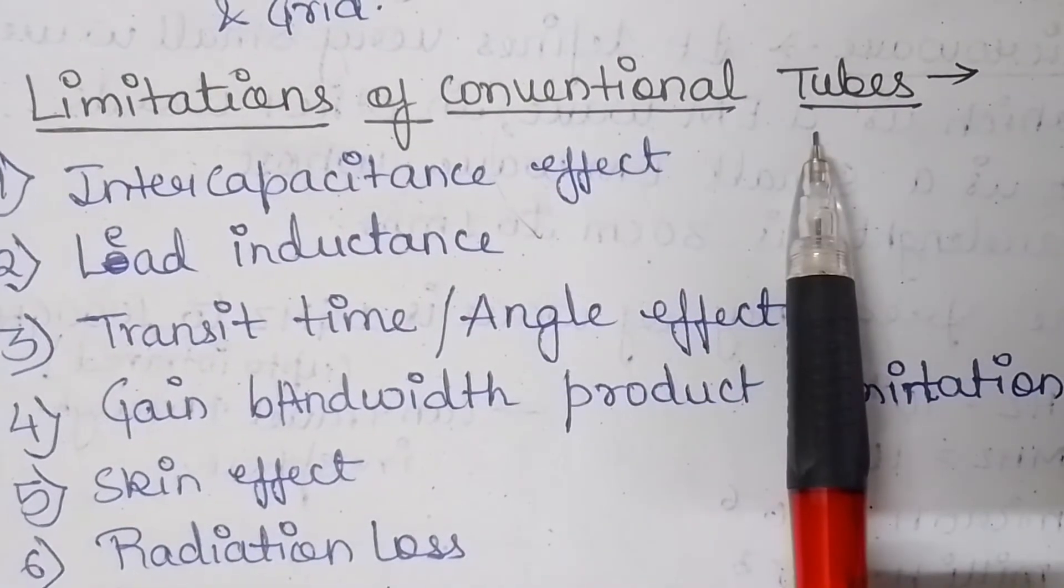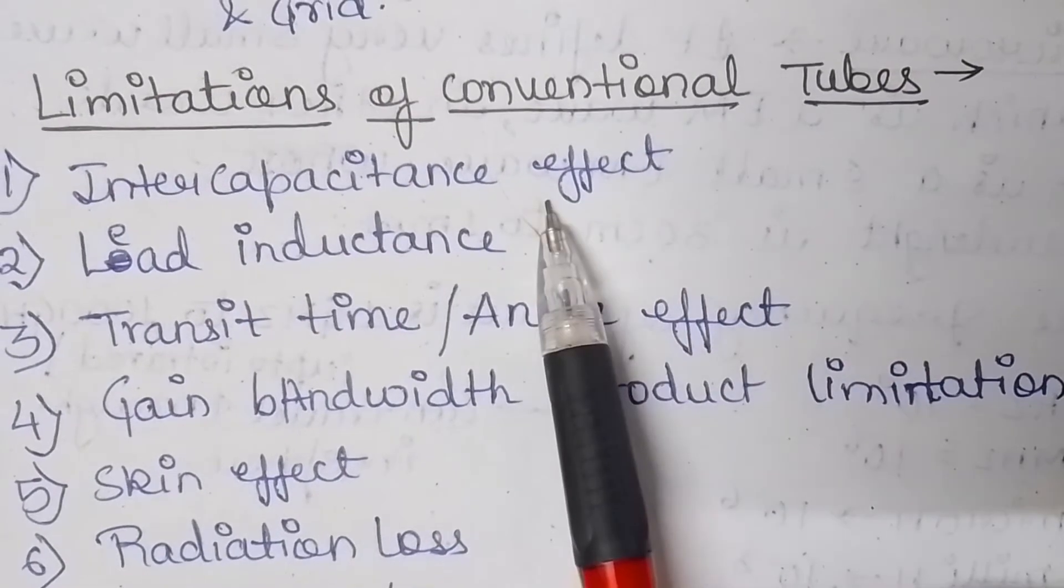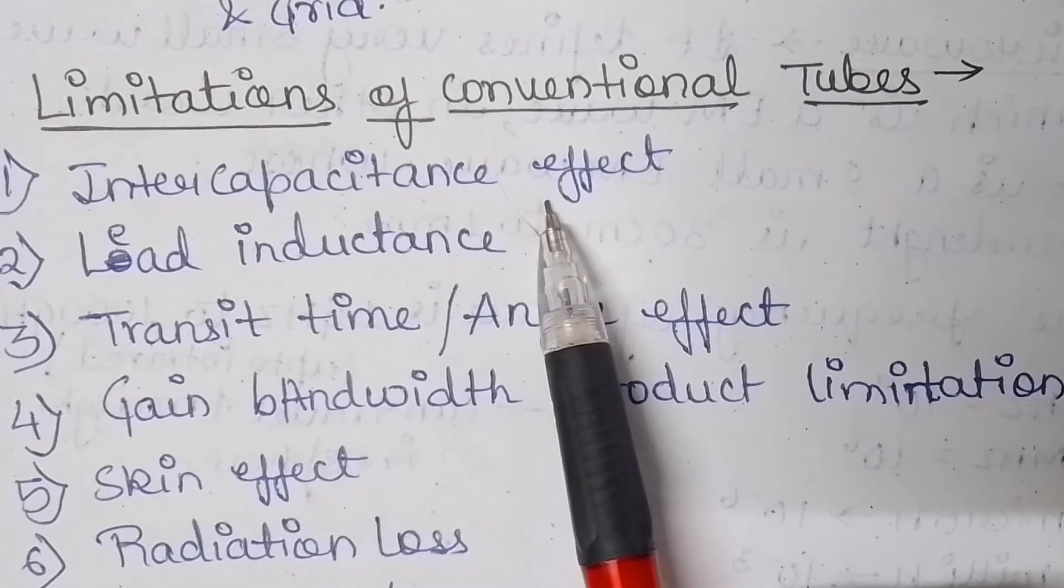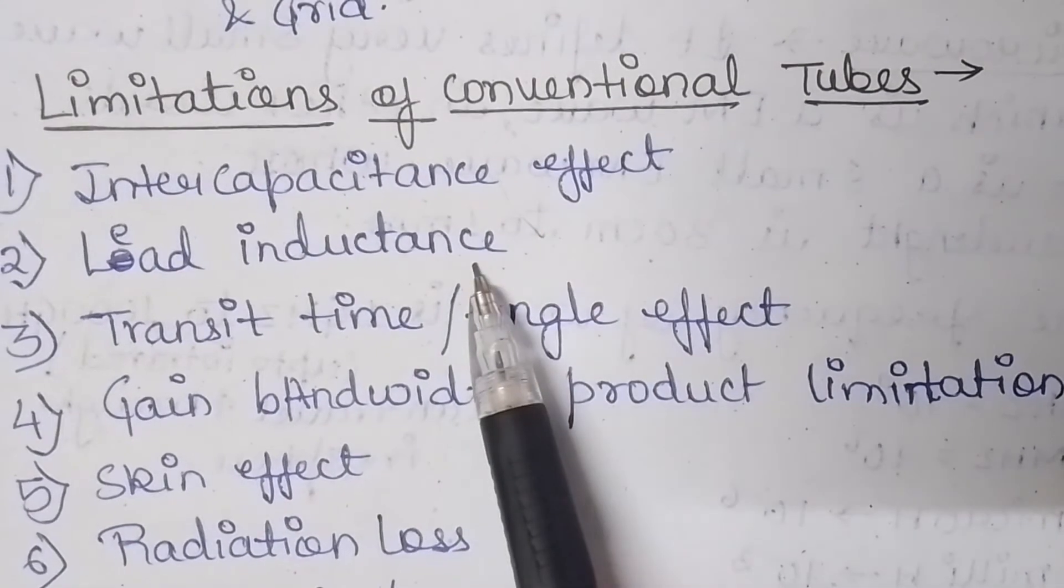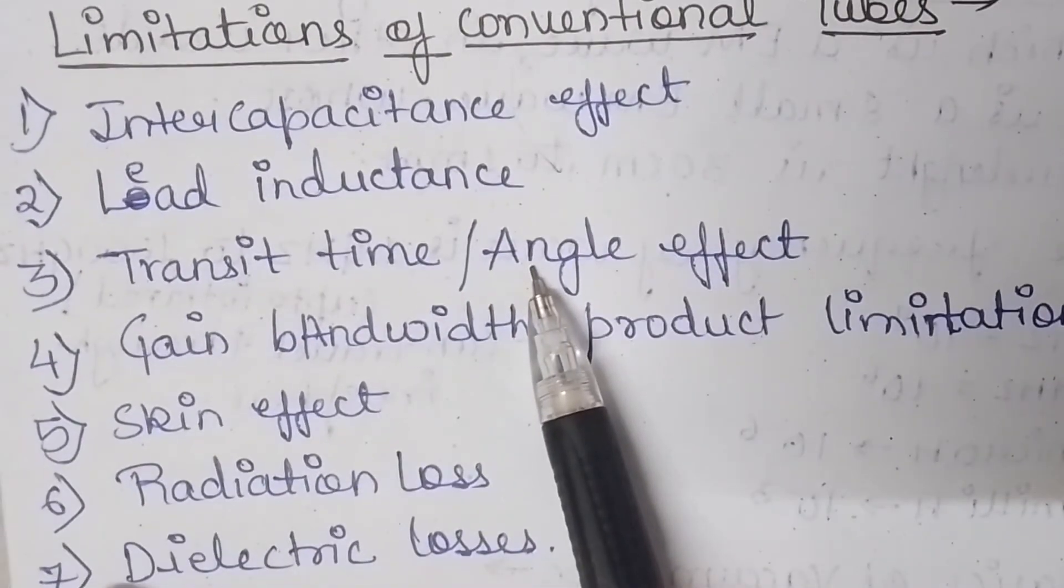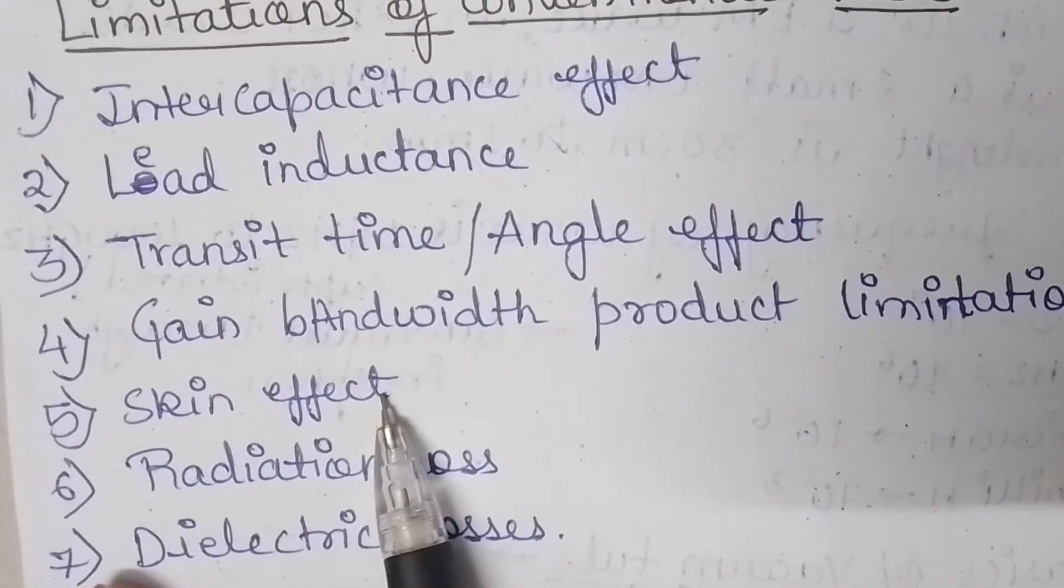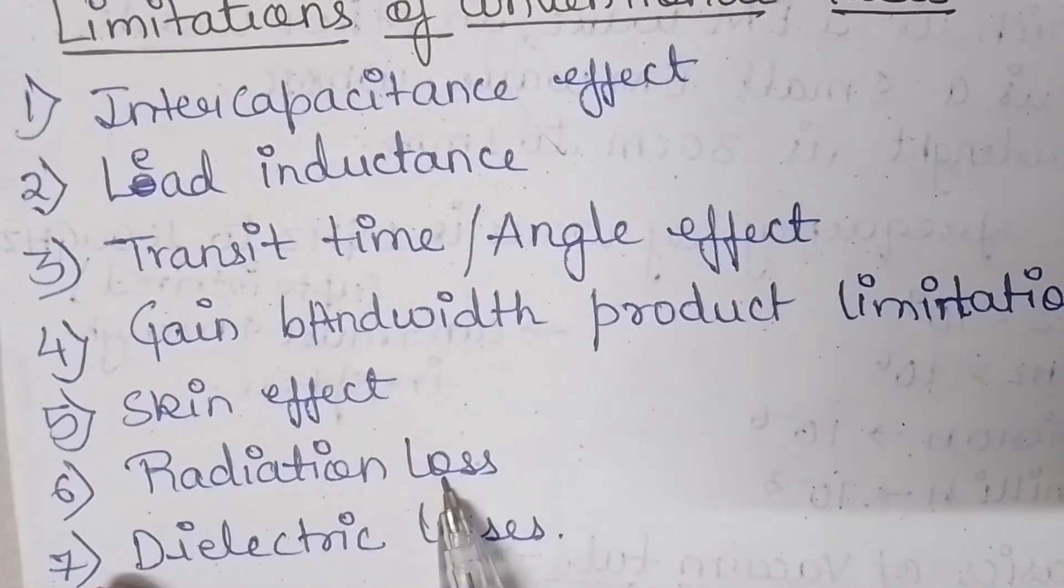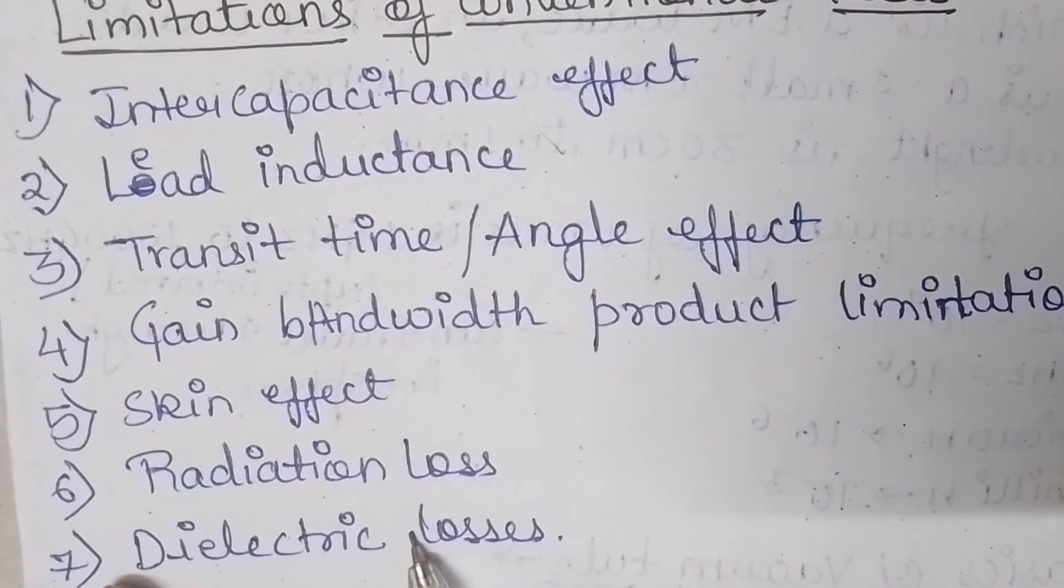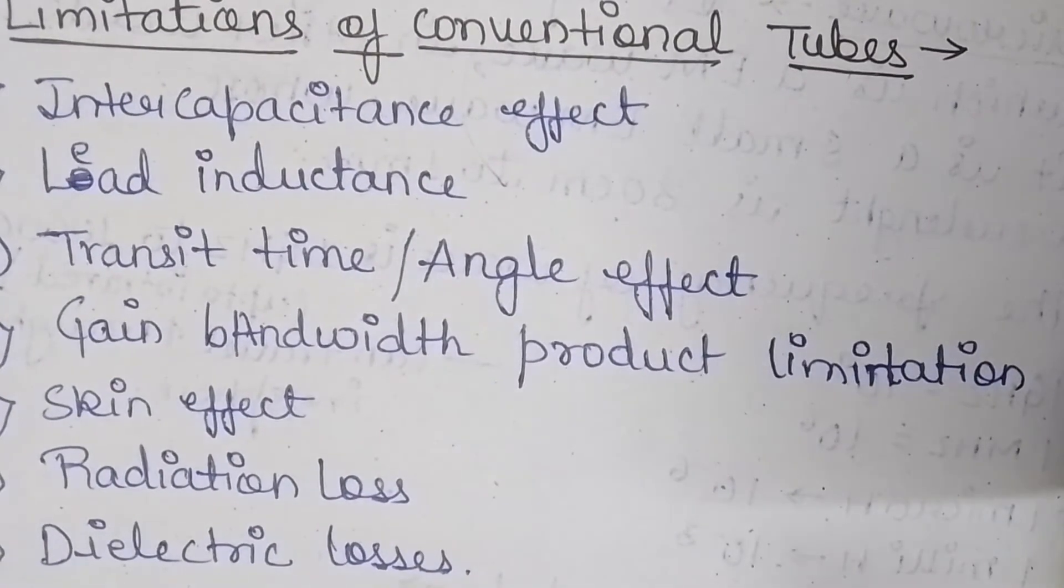The first is intercapacitance effect or the inter-electrode capacitance effect. Second is the lead inductance. Third is transit time or angle effect. Fourth is gain bandwidth product limitation. Fifth is skin effect. Sixth is radiation loss and seventh is the dielectric losses. Now let's learn about each of these individually in detail.